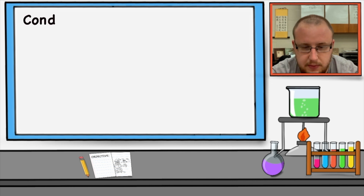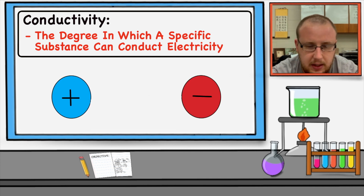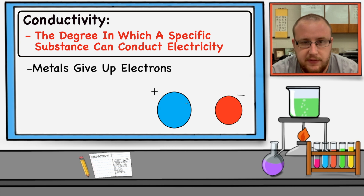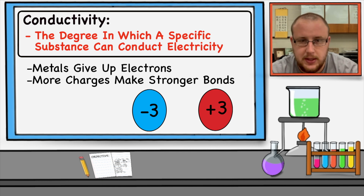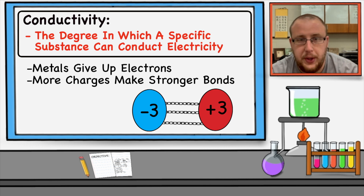Our final bulk scale property is conductivity — the degree to which a specific substance can conduct electricity through it. Electrical currents must have a positive and negative terminal. Metals tend to give up an electron, making them positively charged ions, while something else takes on that electron, creating a negative terminal. Ions within these substances create a pathway through which electric currents can pass. The more cations and anions present, the more charges available. The stronger the electrical bonds, the more electrical current that can flow through, making the substance more conductive and also indicating stronger molecular bonds and more intramolecular forces.